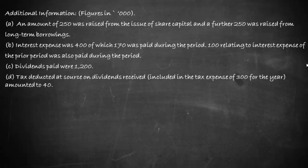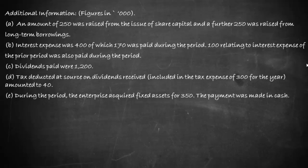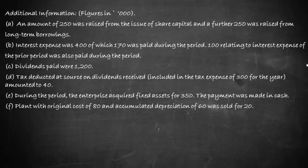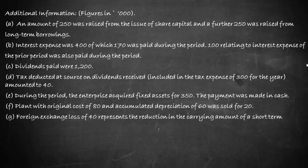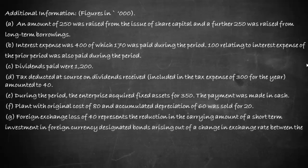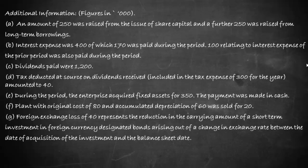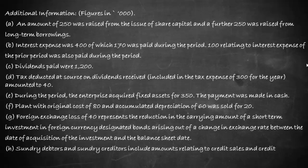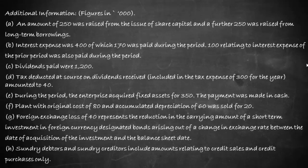Dividends paid were 1200. Tax deducted at source on dividends received, included in the tax expense of 300 for the year, amounted to 40. During the period the enterprise acquired fixed assets for 350 paid in cash. Plant with original cost of 80 and accumulated depreciation of 60 was sold for 20. Foreign exchange loss of 40 represents the reduction in carrying amount of short-term investment in foreign currency designated bonds due to a change in exchange rate. Sundry debtors and sundry creditors relate to credit sales and credit purchases only.